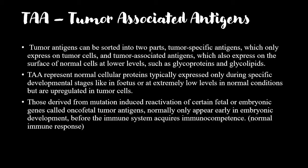Those derived from mutation-induced reactivation of certain fetal or embryonic genes are called oncofetal tumor antigens. They normally appear only early in embryonic development, before the immune system acquires immunocompetence — meaning before the immune system can mount a normal immune response and recognize them as antigens.